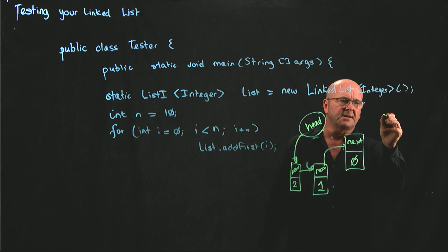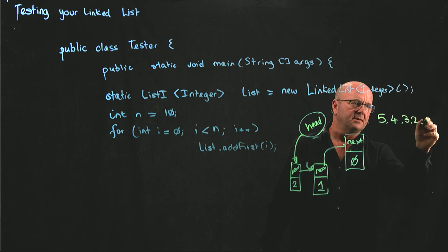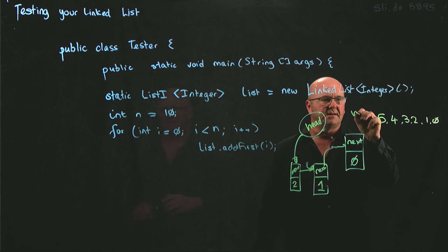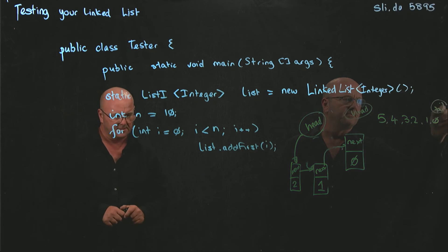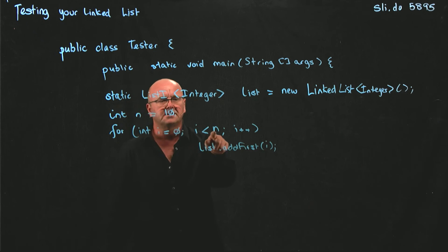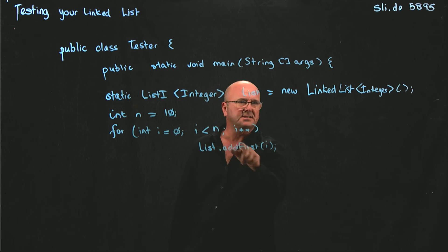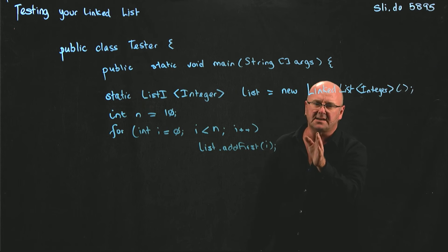That's our add first method. So our list becomes from greater than to less than from head to tail. So we've added some numbers. We've added ten numbers in this case to our list using add first. Remember the list starts at head and goes 9, 8, 7, 6, 5, 4, 3, 2, 1.